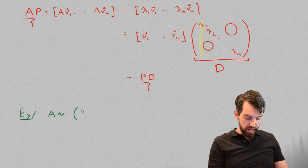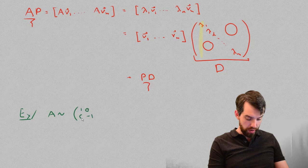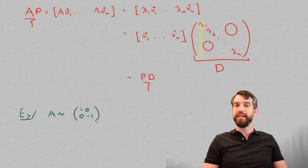How about this one here? 1, minus 1, 0, 0. That's the diagonal matrix that it's similar to.